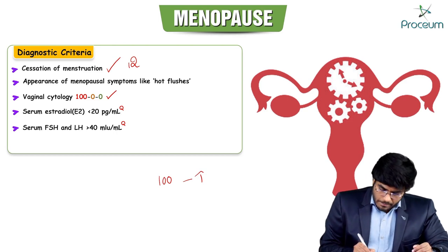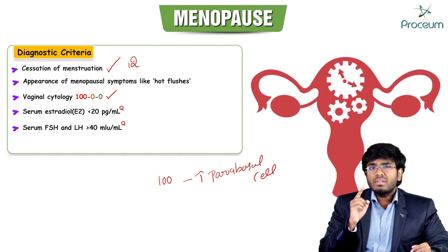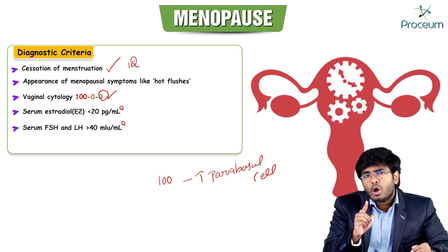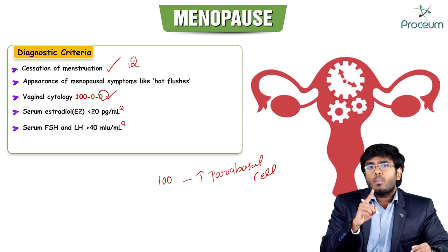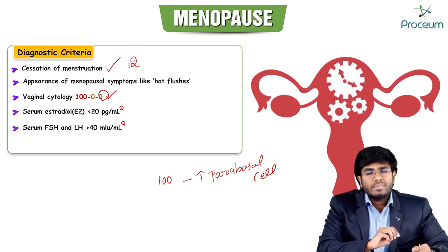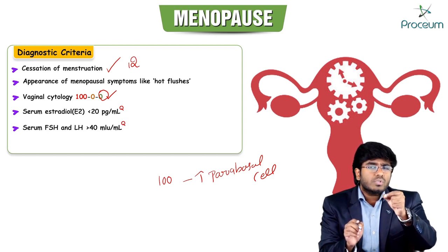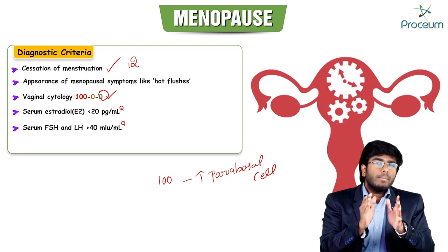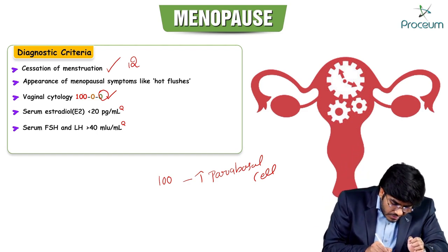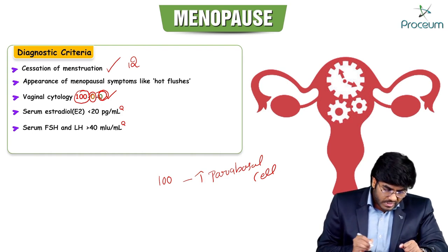Another diagnostic criterion is vaginal cytology showing a pattern of 100/0/0, meaning more parabasal cells and zero intermediary and zero superficial cells. Normally, more superficial cells are seen during estrogenic predominance (follicular phase), more intermediary cells during progesterone dominance (luteal phase). During menopause, both estrogen and progesterone are very low, so parabasal cells predominate.